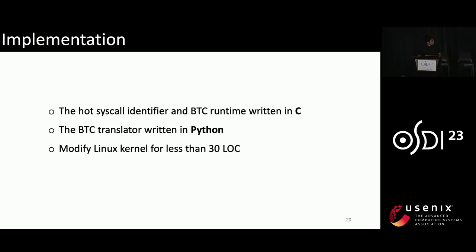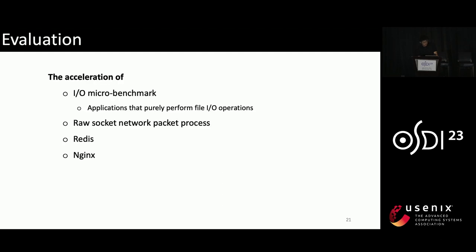For implementation, we implement the Hot Syscall Identifier and BTC Runtime in C, mostly as a kernel module. The BTC Translator is implemented in Python. We also modify the Linux kernel with fewer than 30 lines of code.